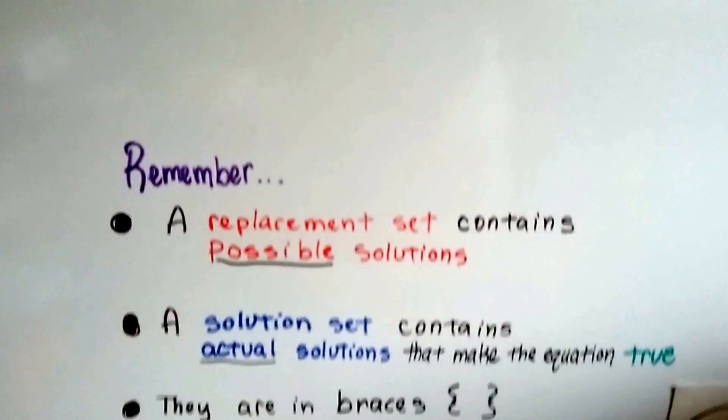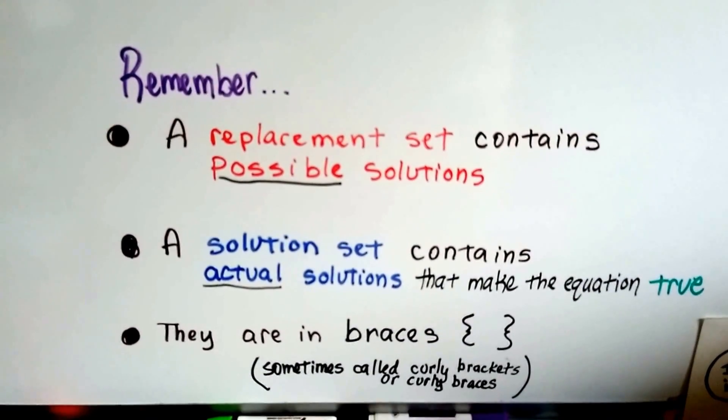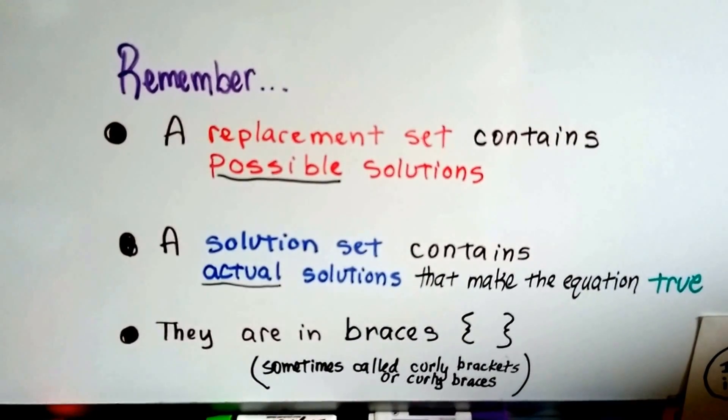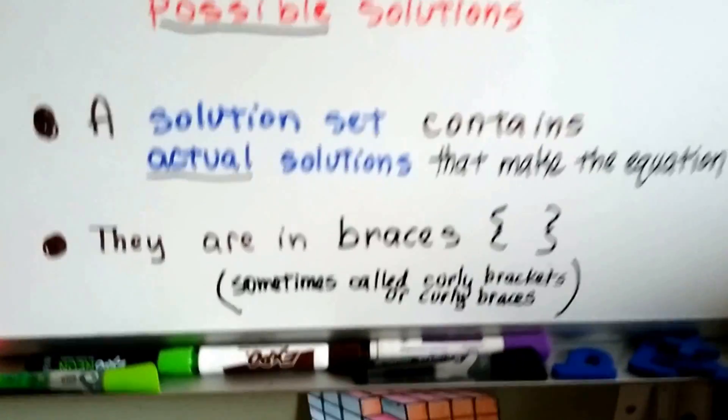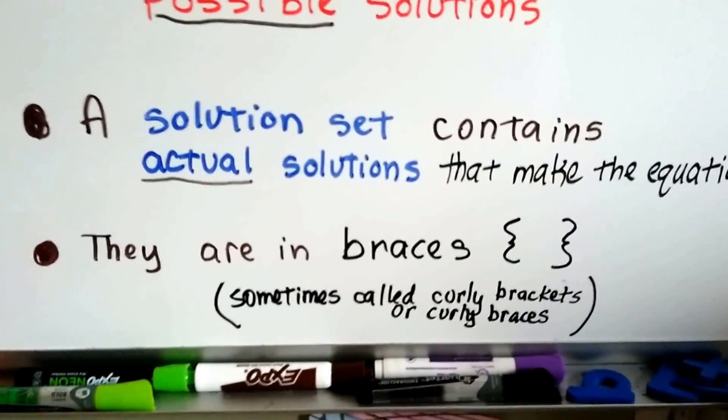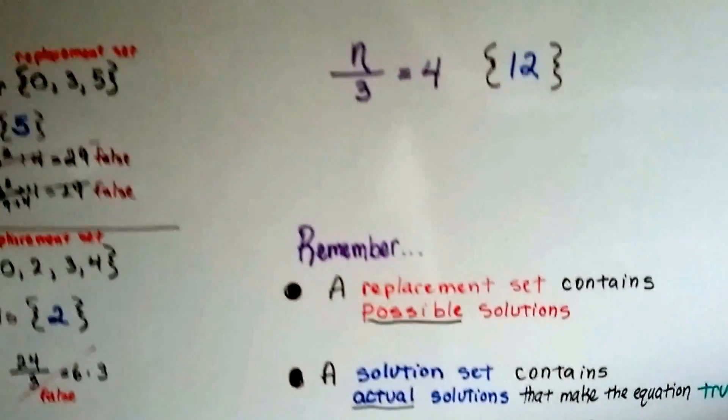So remember, a replacement set contains possible solutions. A solution set contains actual solutions that make the equation true. And they're in braces. And they're sometimes called curly brackets or curly braces. But generally, in math, they're called braces.